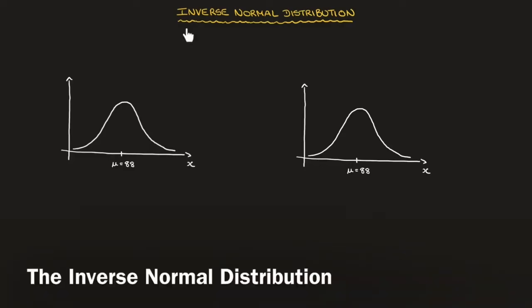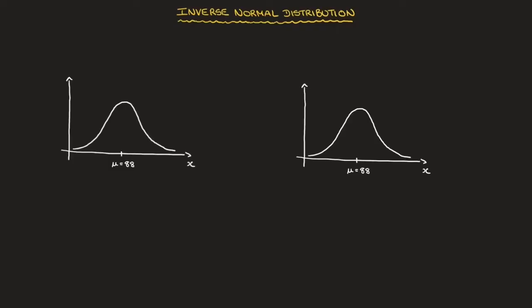Hi everyone. We now learn about inverse normal distributions. Throughout this tutorial we're going to be working with a continuous random variable, which I'll call capital X, which follows a normal distribution whose mean is 88 and standard deviation is 19, which means that its variance is 19 squared.